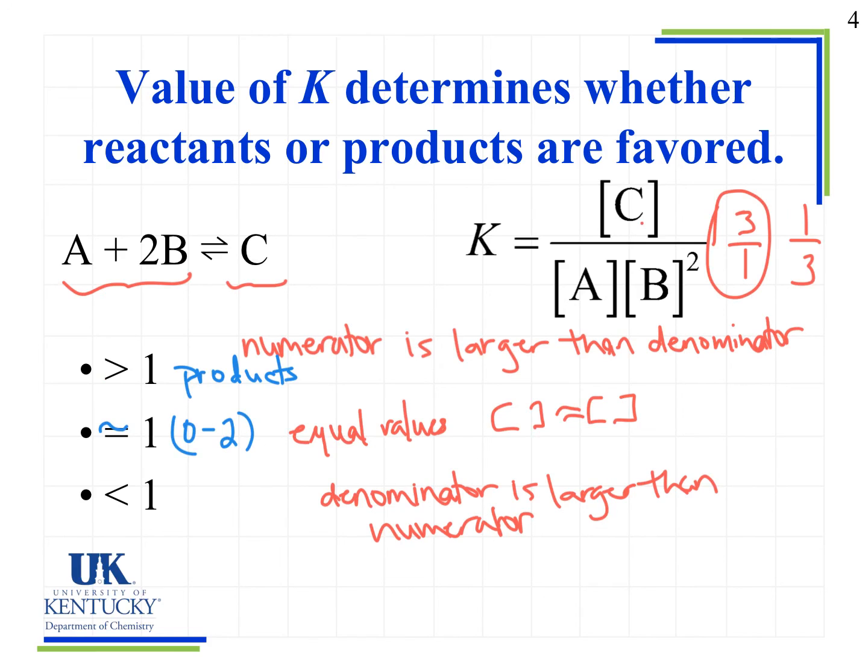And as a result, this tells us that the substances in the reactant side, because those are in the denominator, are favored. So we say the reactants are favored, which means the amount of reactants is greater than the amount of products.